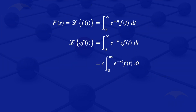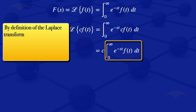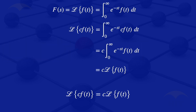So what we have is the Laplace transform of C times F of T equals C multiplied by the integral from zero to infinity of e to the minus ST times F of T dT. Comparing that integral with the definition of the Laplace transform, we see that integral is the Laplace transform of F of T. So by definition, the highlighted part is the Laplace transform of F of T, giving us C multiplied by the Laplace transform of F of T, which is what we were required to prove.